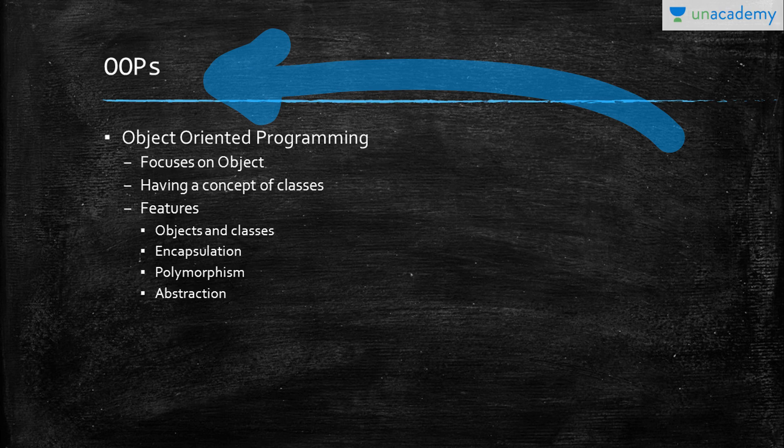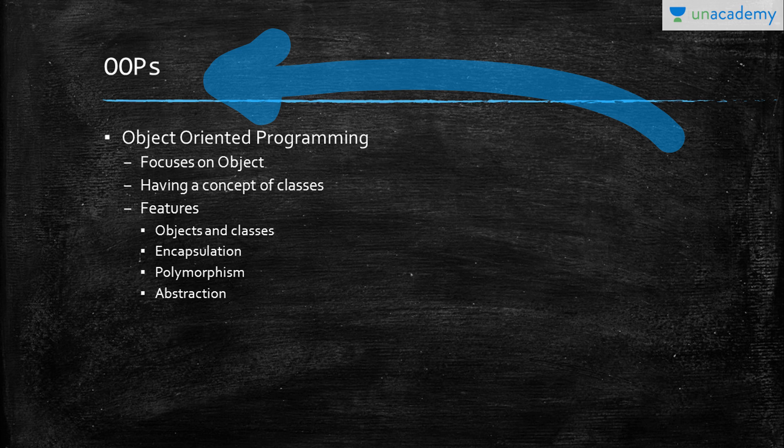Next concept, moving on, we have OOPs, which is called Object Oriented Programming. This is the most advanced topic which changes the definition of a high-level language as compared to a low-level language. Previously when we had POC, that is Procedure Oriented Concept, we used to focus more on the procedure or the definition.